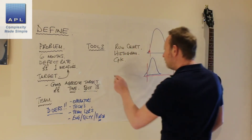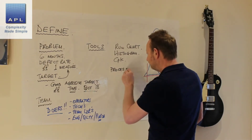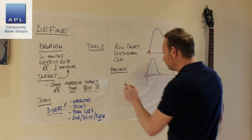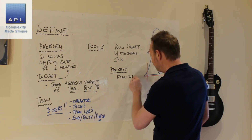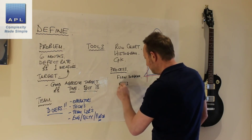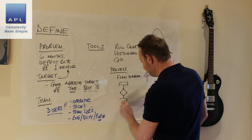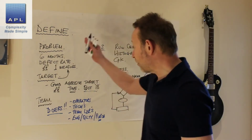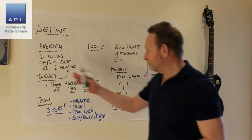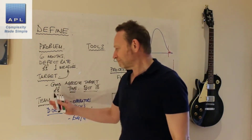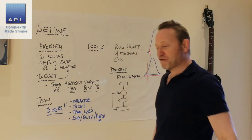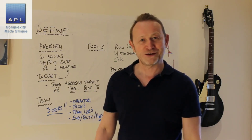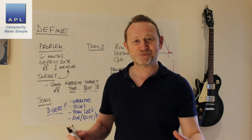So we want you to define the problem, the target, and the team. What else? I want you to define the process — specifically the process that's letting you down. You're going to do this with a flow diagram, whatever that looks like for your situation. Use some pictures, use some data. Define your problem, define your target, define your team, and define your process — and that is the perfect start to a Six Sigma project.